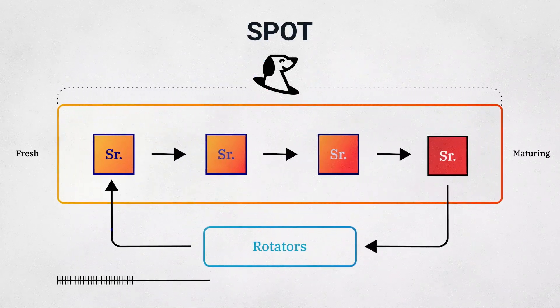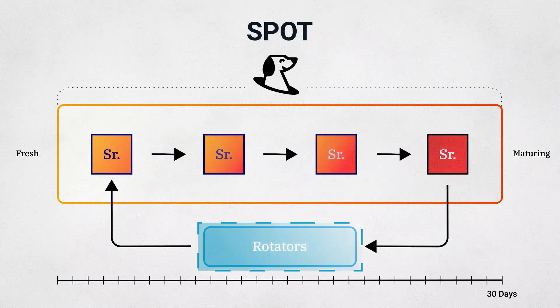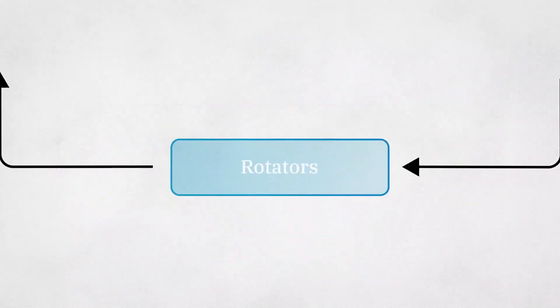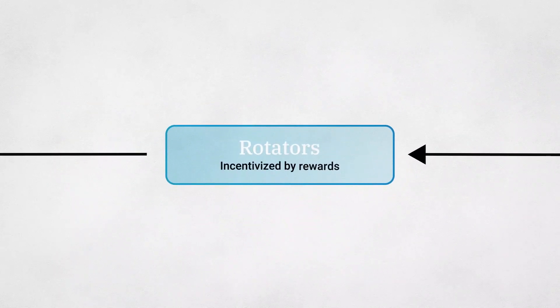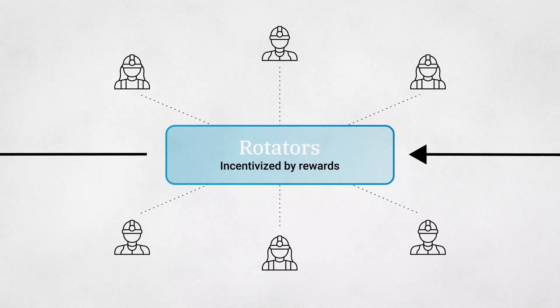When senior Ample tranche tokens in SPOT's collateral set are approaching their maturity date, they are rotated out in exchange for fresh senior Ample tranche tokens that mature later. These rotations are upheld by a system of incentives that reward rotators for performing this task of keeping tranches fresh.